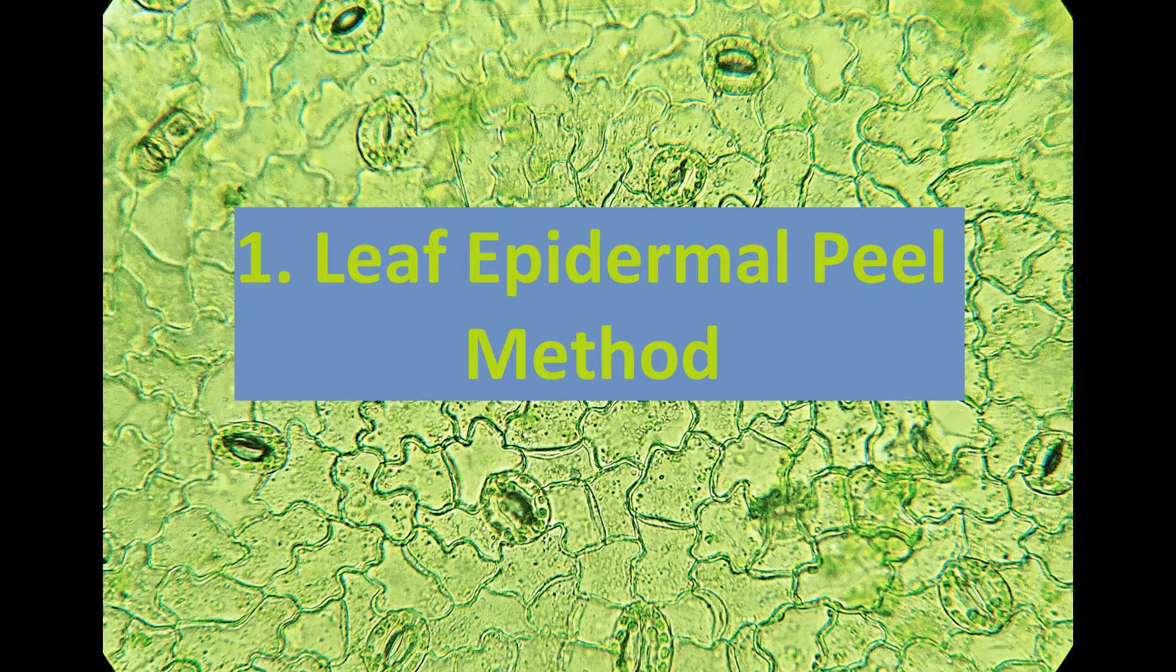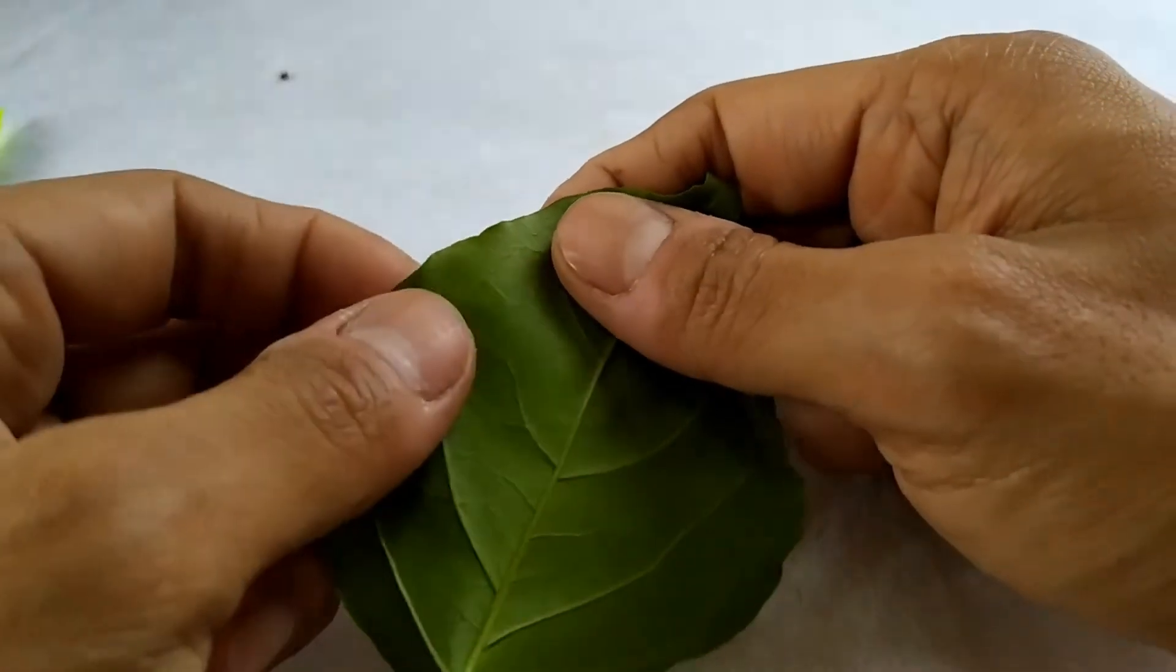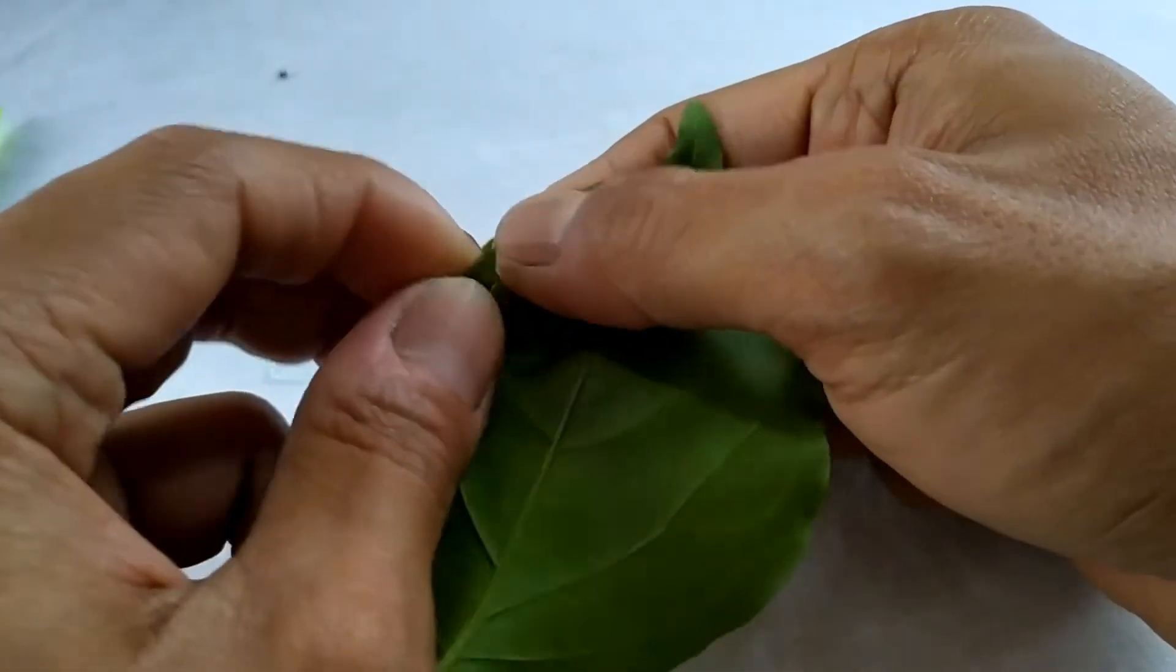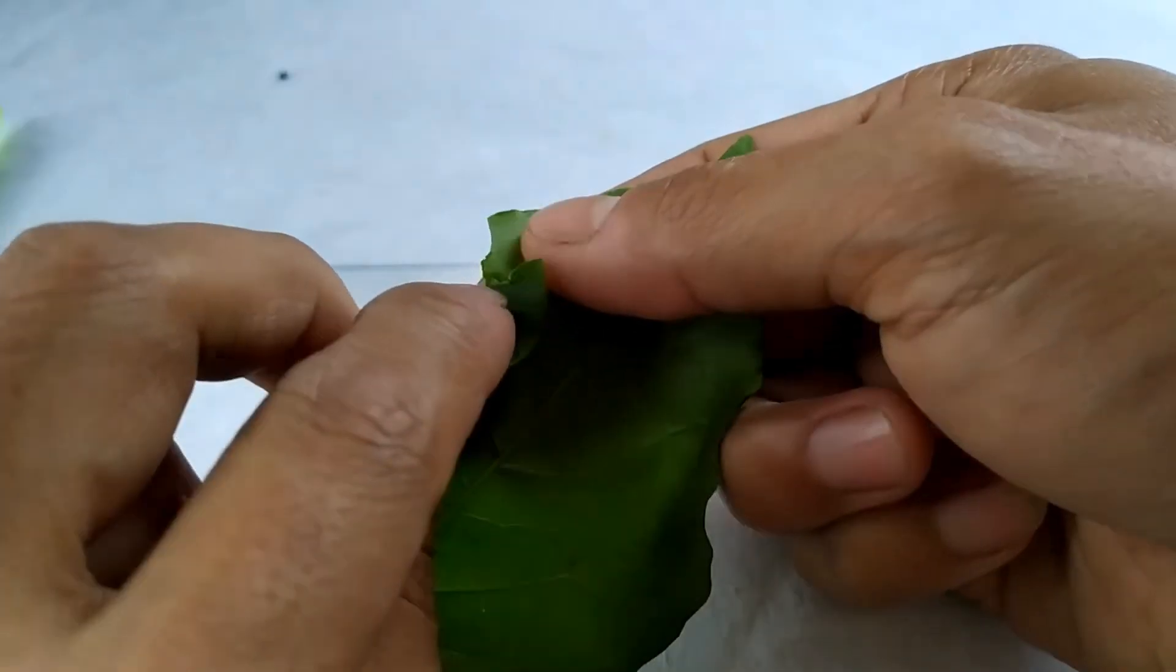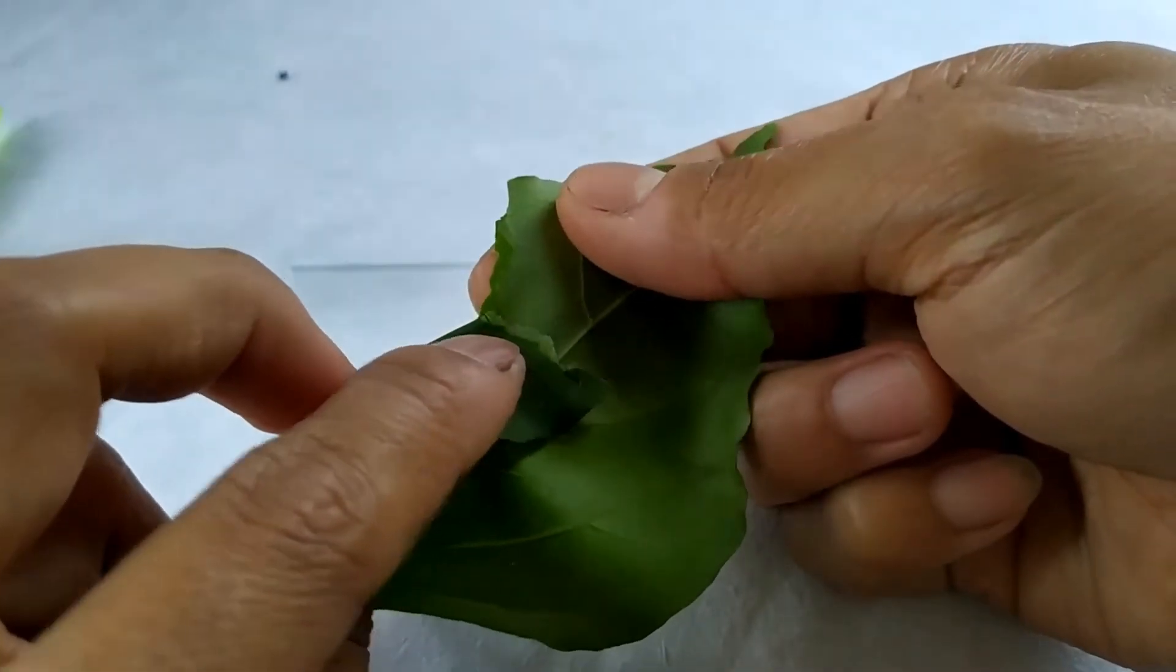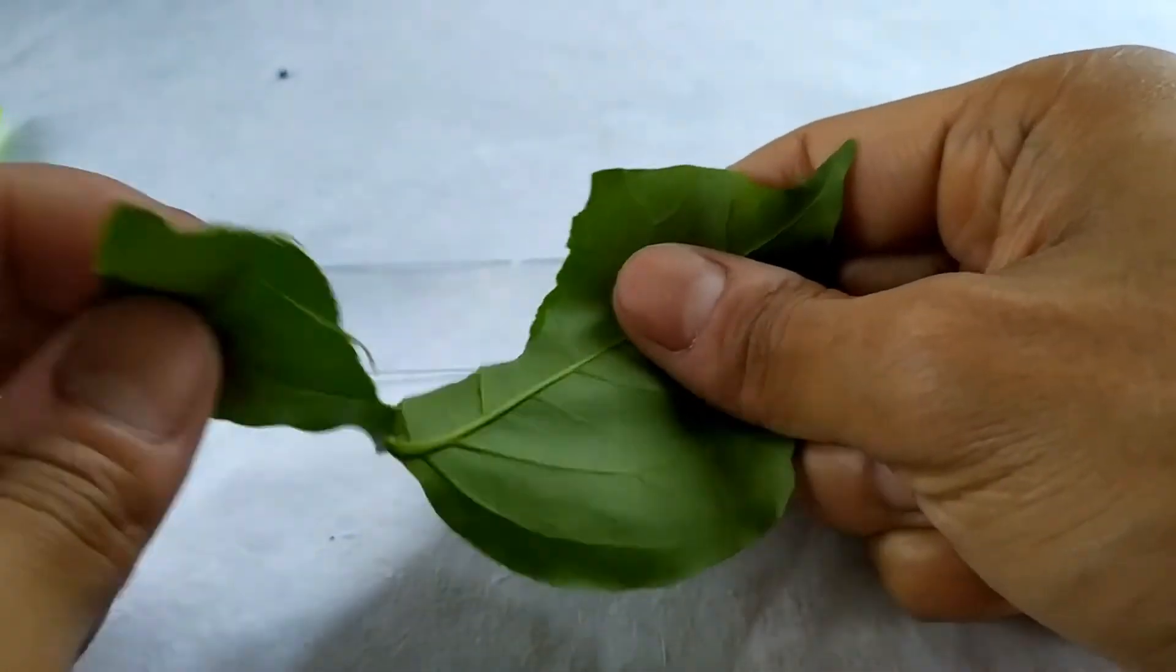For the leaf peel method, we begin the experiment by taking a fresh green leaf. Hold the leaf in one hand with the lower surface facing up. Partially break the leaf by folding it and gently pull a segment of the leaf blade towards you.